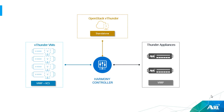Hello everyone. We'll be doing a demo today for Harmony Controller. We will be registering different devices onto the Harmony Controller and we will be going over the main features and capabilities of Harmony Controller. I have four V Thunders which are part of a VCS chassis and are created on ESXi. I have a standalone V Thunder on OpenStack and I have two hardware appliances which are part of the VRP chassis.